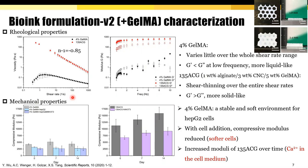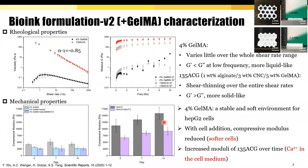As mentioned previously, mechanical strength and degradation profile are essential in developing bioinks, so we performed tests on these properties. The compressive modulus of 4% gelatin hydrogels was around 4 kPa, within the range of the stiffness of a healthy liver, meaning 4% gelatin provides a soft and stable environment for HEPG2 cells. Compared to the gelatin hydrogels, the hybrid hydrogels were much stiffer, over 10 kPa. Upon cell suspension in both bioinks, the modulus reduced due to the softer cells and material voids. Interestingly, the compressive modulus of both acellular and cellular 135-ACG hydrogels increased on day 14, which can be attributed to the strengthening of the alginate network by calcium ions in the cell medium.